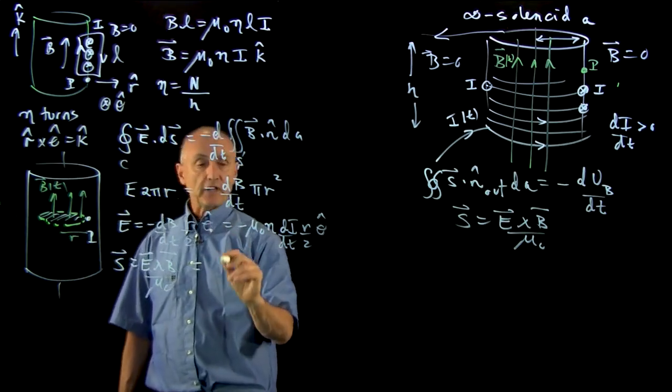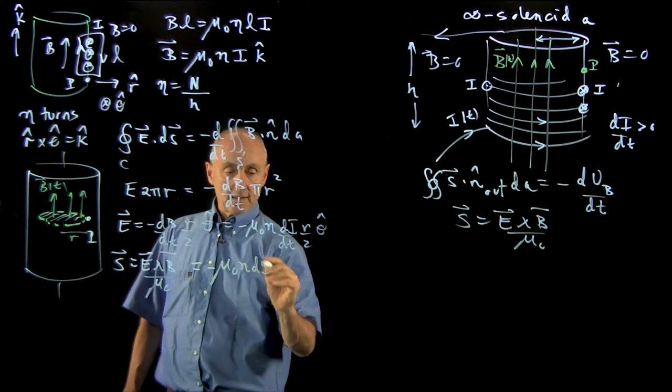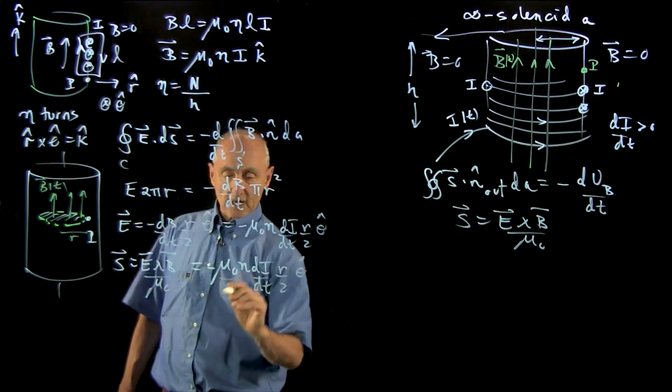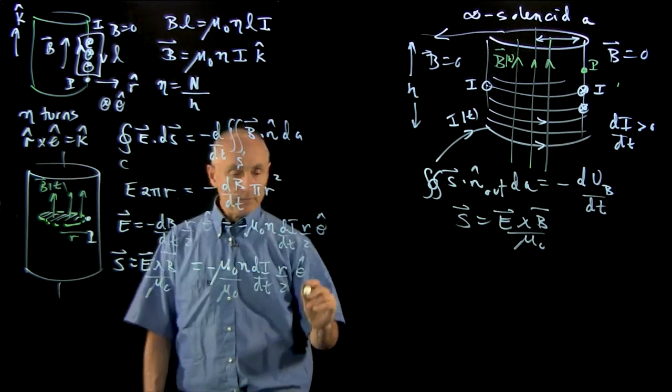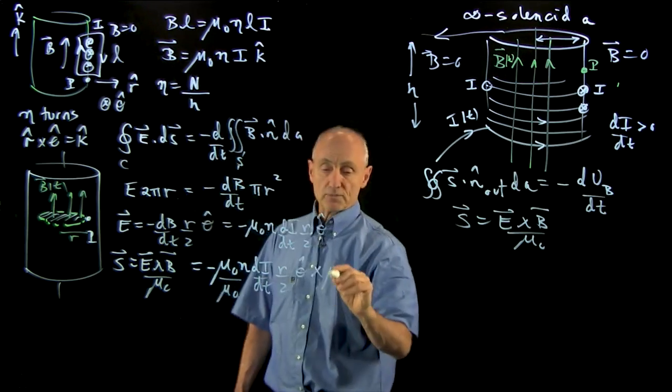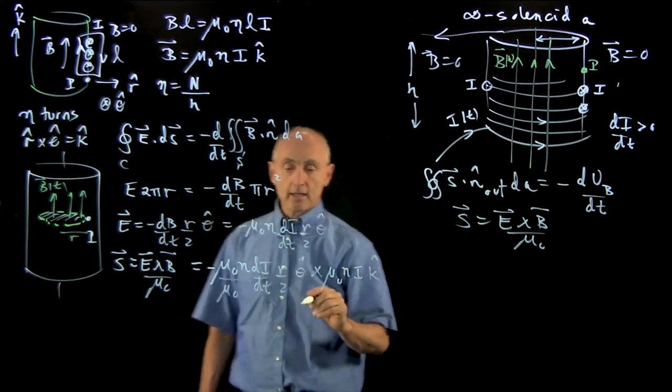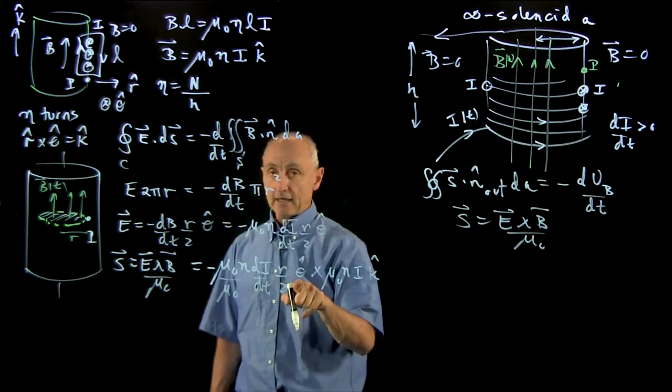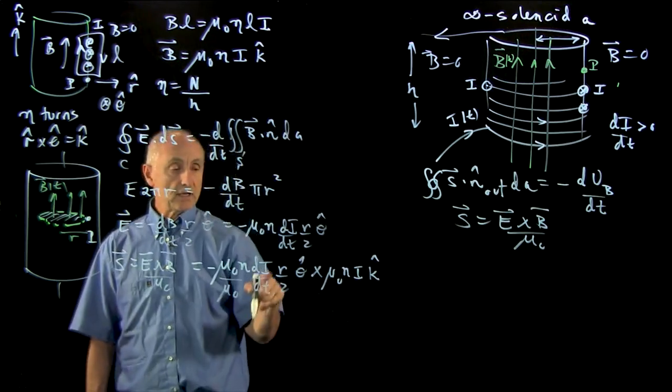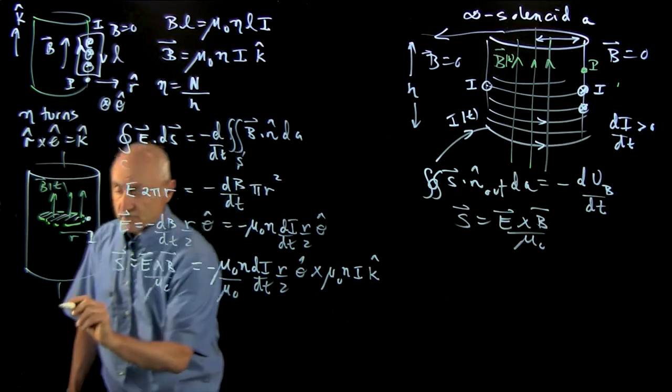Now we calculate the electric field. We have minus mu_0 n di/dt r over 2 theta-hat. We're dividing by mu_0, and we have to take the vector cross product with the magnetic field, which is mu_0 n i k-hat. Here again, we have theta-hat cross k-hat, which in our right-handed system is r-hat. But the extra minus sign shows us that, once again, the Poynting vector is radially inward.